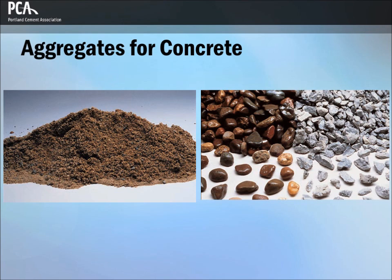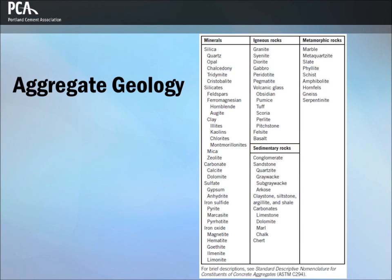Close to half of the coarse aggregates used in concrete in North America are gravels. Concrete aggregates are a mixture of rocks and minerals. A mineral is a naturally occurring solid substance with an orderly internal structure and a chemical composition that ranges within narrow limits. A rock is generally composed of several minerals. Rocks are classified as igneous, sedimentary, or metamorphic, depending on their geological origin.